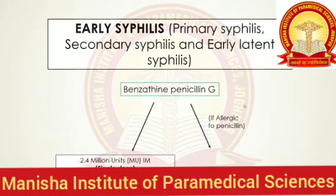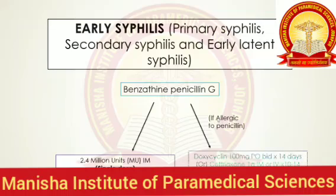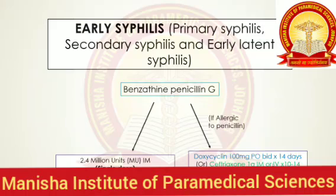Alternatively, if a patient is allergic to penicillin or can't tolerate intramuscular penicillin, then doxycycline at a dose of 100 mg per oral is given twice a day for 2 weeks. Or there is another drug called ceftriaxone, which is given at a dose of 1 gram intramuscularly or intravenously for 10 to 14 days. This covers treatment of early syphilis including primary, secondary, and early latent syphilis.